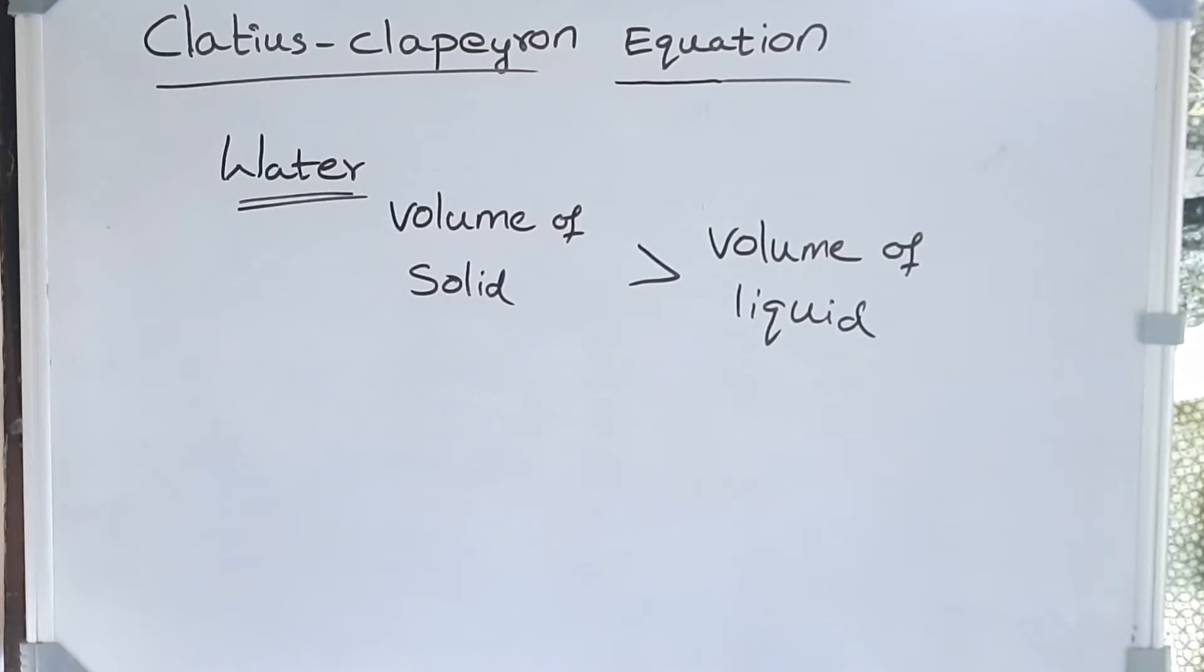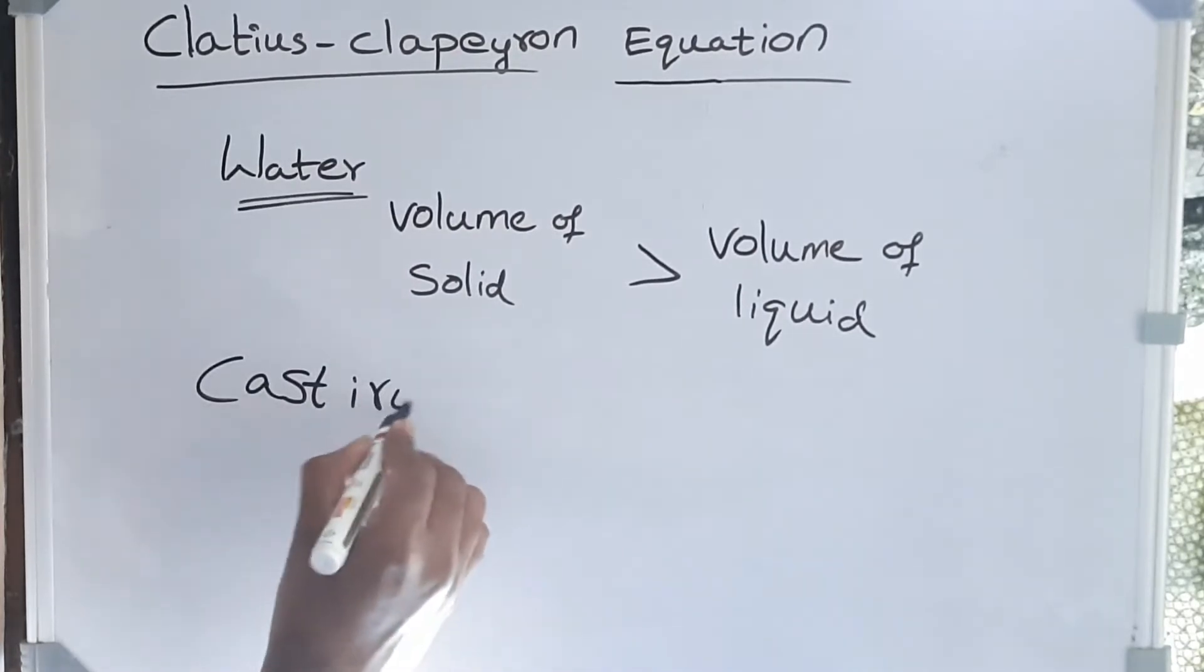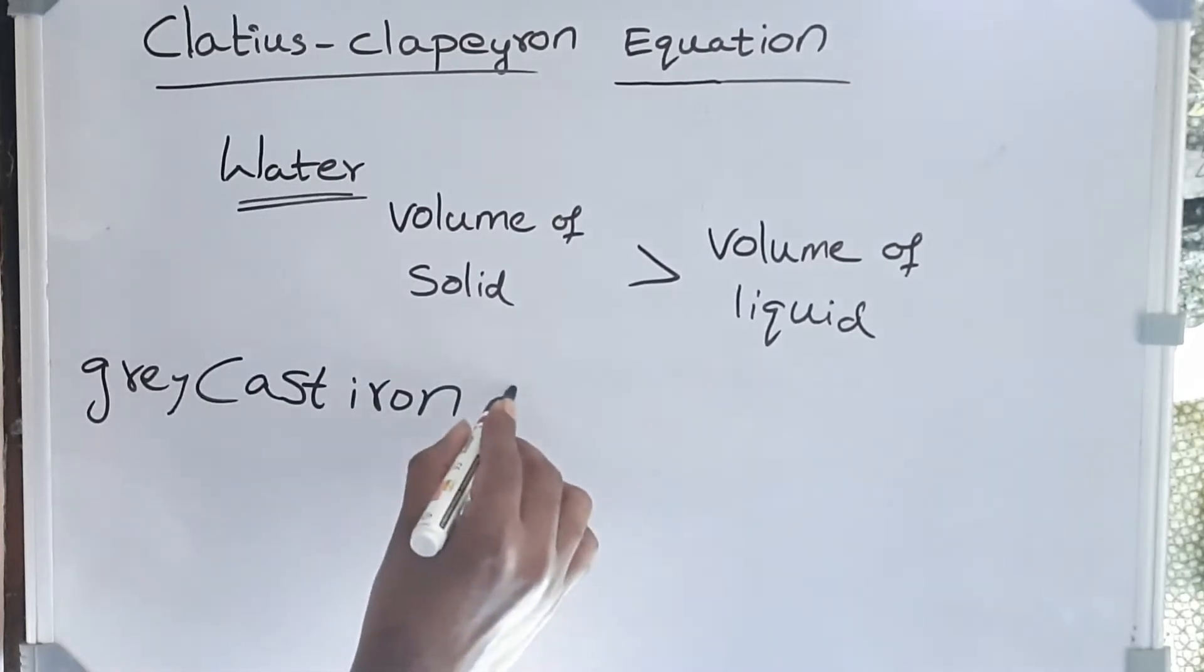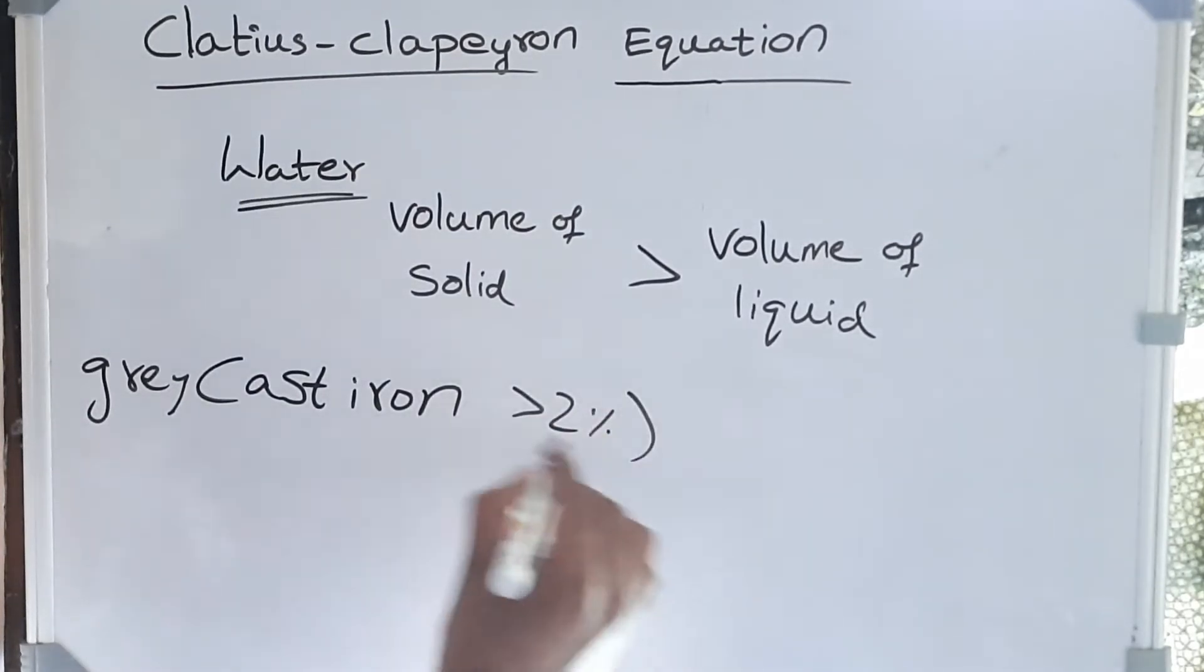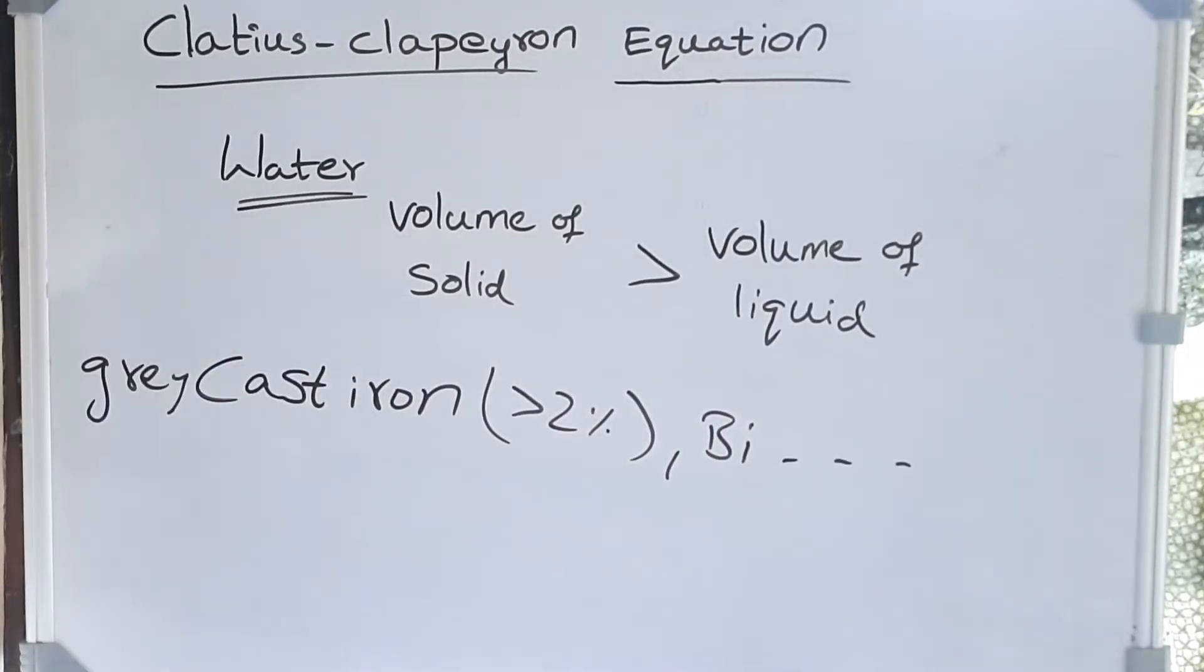Just like water, we also have cast iron, bismuth, grey cast iron with carbon percentage more than 2 percent, and bismuth, etc. These are the materials which expand on solidification. Here we need to understand when water melts its volume is decreasing.